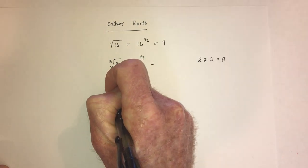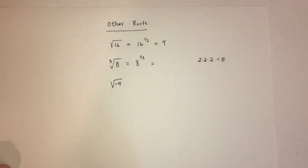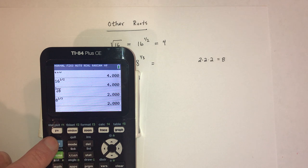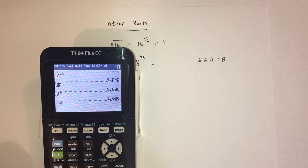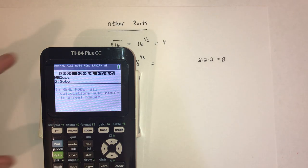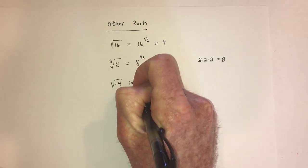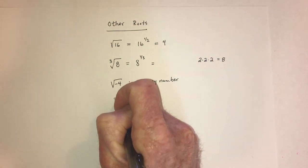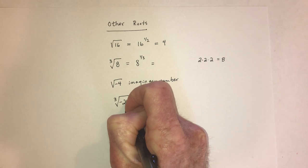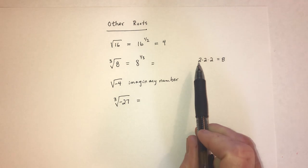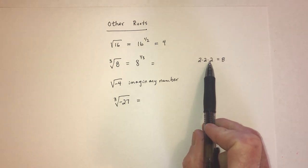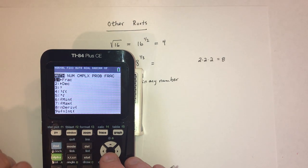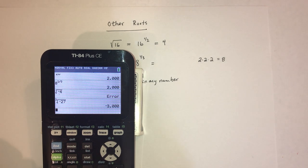If you take the square root of a negative number, that is imaginary. We're not going to deal with imaginary numbers — the calculator will say that's not a real number. But if it's an odd root, like the cube root of negative 27, that's possible. Using the cube root function, the cube root of negative 27 is negative 3.